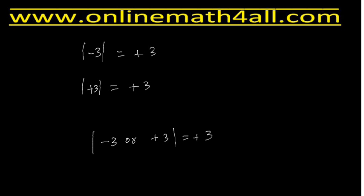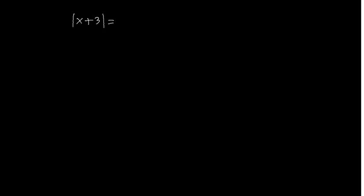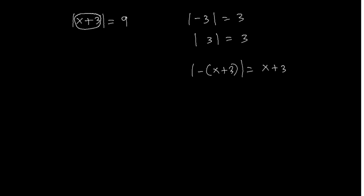Now we can see how to solve the absolute value equation. Moving back to the original problem — absolute value of x plus 3 is equal to 9 — consider the expression inside the absolute value, that is x plus 3. Just as we saw, whether we have a positive or negative value inside the absolute value, we get the same positive result. So the absolute value of negative (x plus 3) equals x plus 3, and the absolute value of positive (x plus 3) also equals x plus 3.